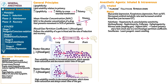We treat malignant hyperthermia with dantrolene, which is also used to treat neuroleptic malignant syndrome because it is a direct-acting skeletal muscle relaxant. We also use cooling and supportive care. Genetic susceptibilities include ryanodine receptor RYR1 mutations and mutations in genes encoding skeletal muscle L-type calcium channels.